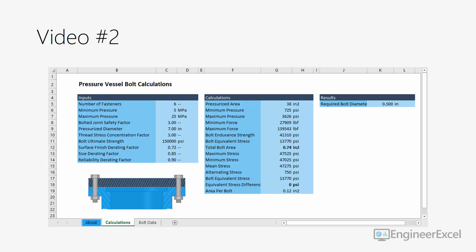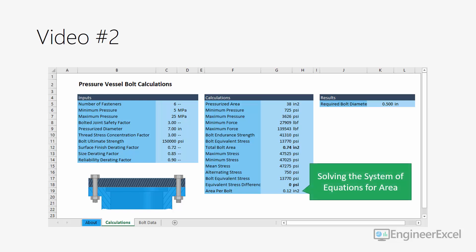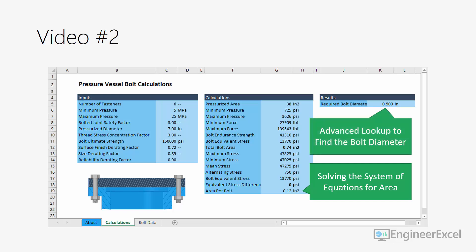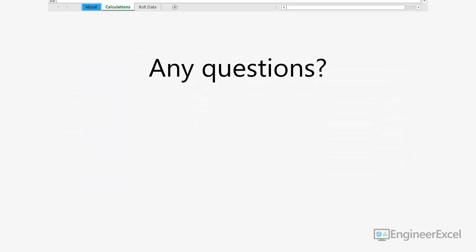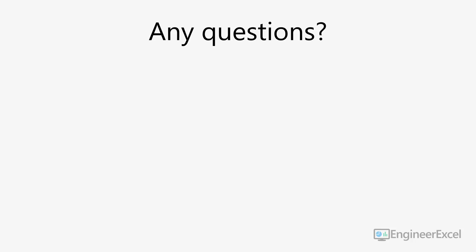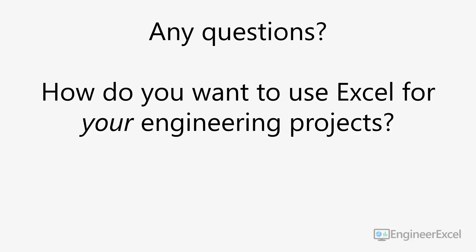That's how you can use named ranges and the CONVERT function in your spreadsheets to minimize Excel frustration. In the next video, I'll show you how to easily solve that nonlinear system of equations in Excel — something that 90% of engineers haven't discovered yet. And once we've solved that system, we'll use advanced lookup functions to find the correct hardware size for the design. Leave a comment below with any questions and let me know how you want to use Excel for your engineering projects. Thanks for watching!